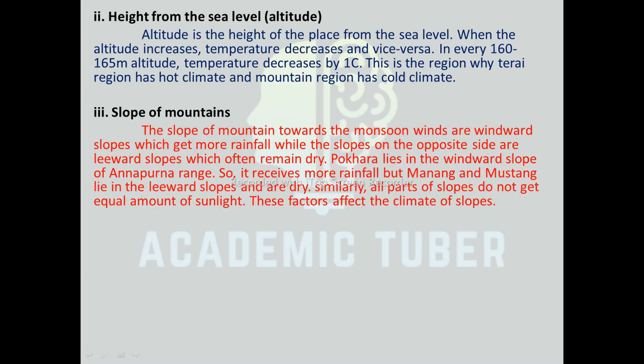The next factor is slope of mountains. The slopes of mountains facing the monsoon winds are windward slopes, which get more rainfall, while the slopes on the opposite sides are leeward slopes, which often remain dry. Pokhara lies on the windward slope of the Annapurna range, so it receives more rainfall. But Manang and Mustang lie on the leeward slopes and are dry. Similarly, all parts of slopes do not get an equal amount of sunlight, which also affects the climate.